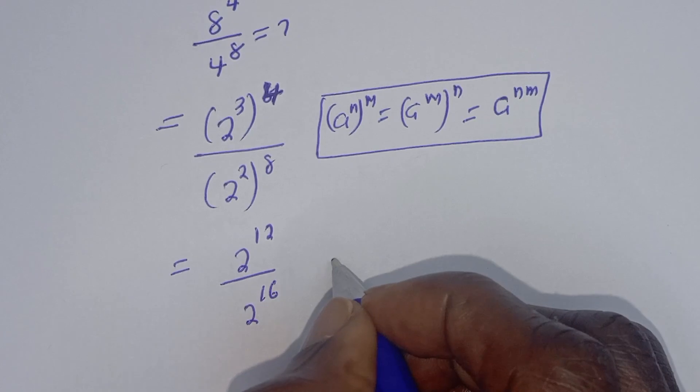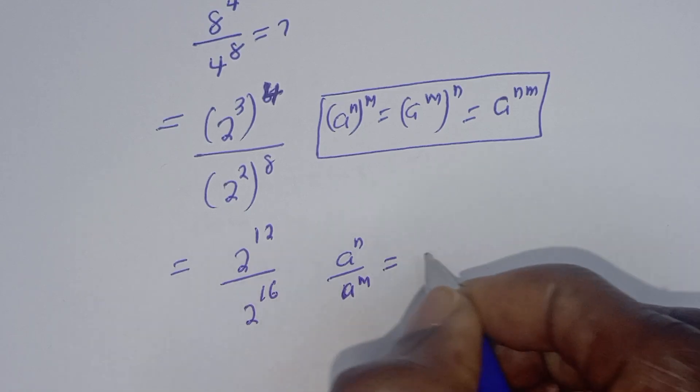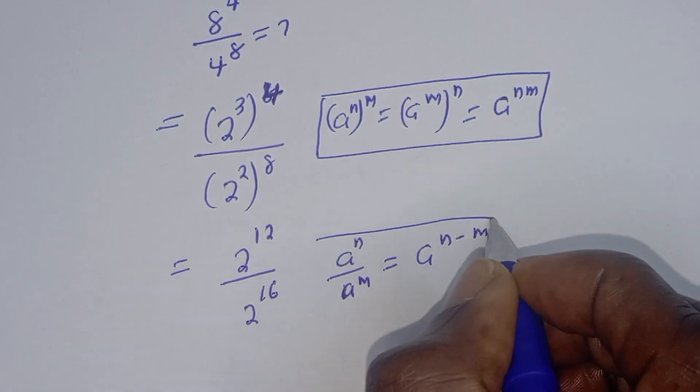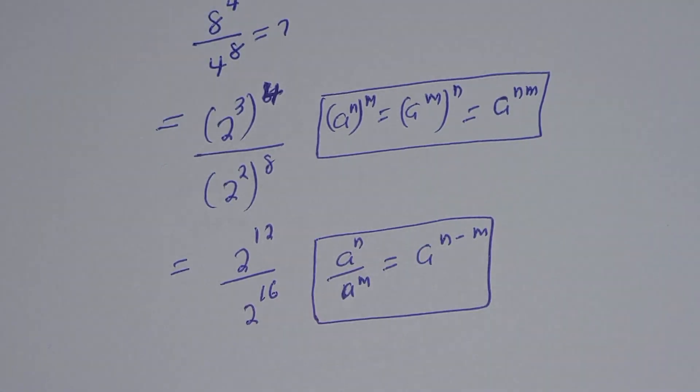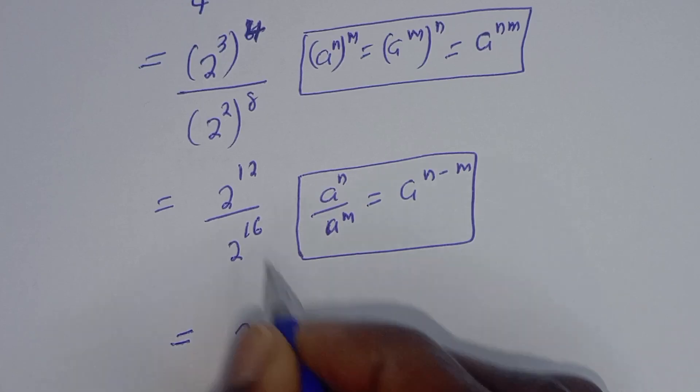Now also take note of this: if you have a raised to power n over a raised to power m, this is equal to a raised to power n minus m. This is equal to 2 raised to power 12 minus 16.